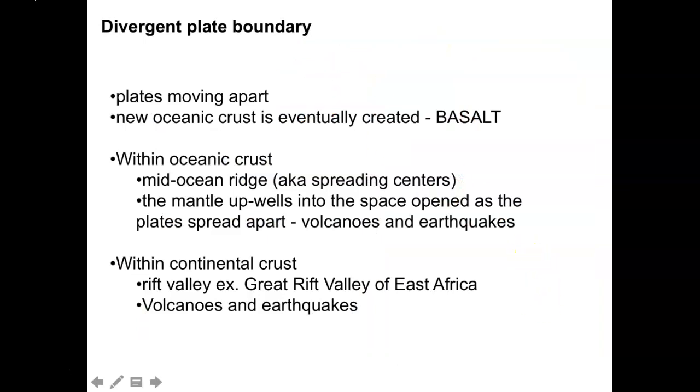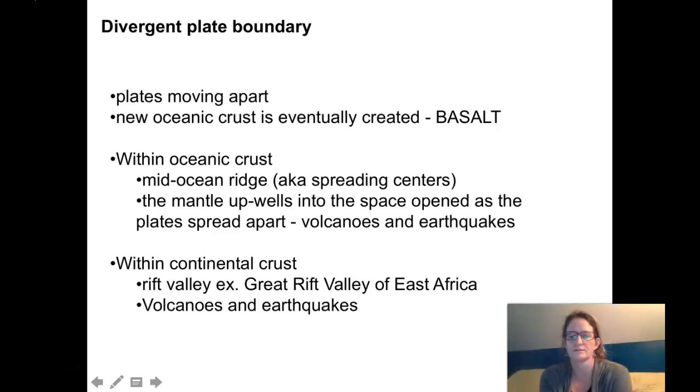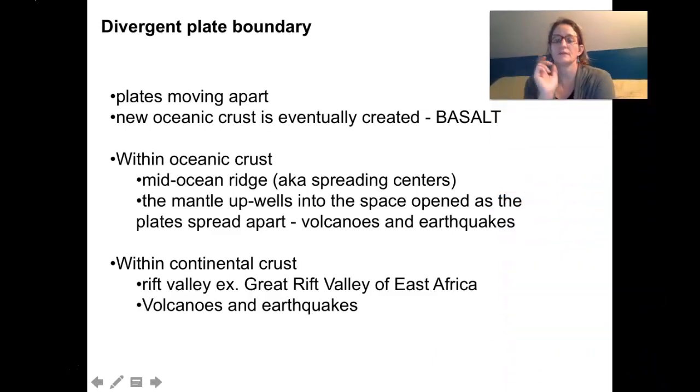Let's look at some details of the divergent plate boundary. The plates are moving apart at this location. At the location of divergent plate boundaries, new land is forming, and the rock type at pretty much all those plate boundaries that's being created is a rock type called basalt.